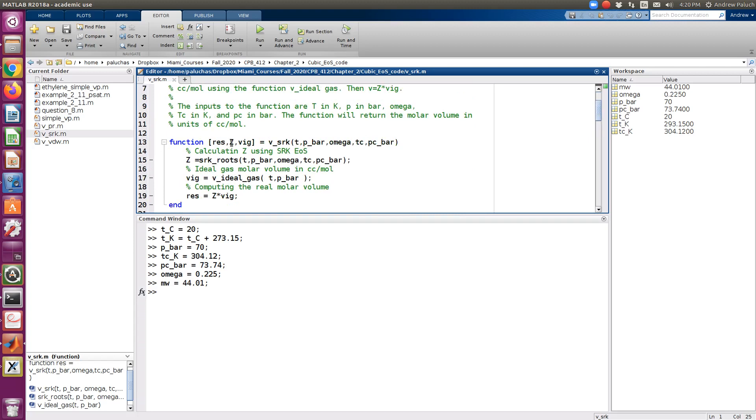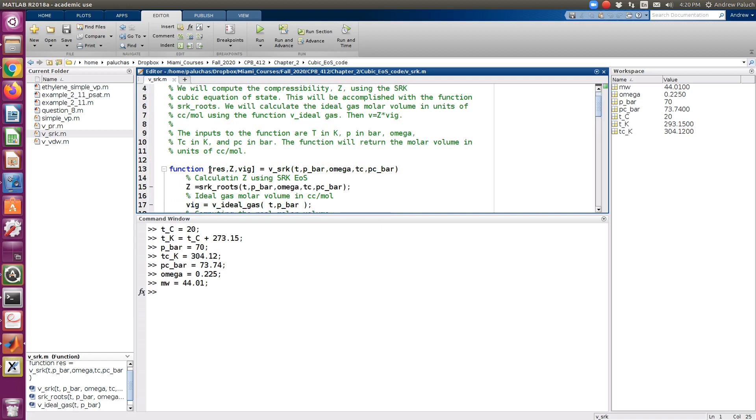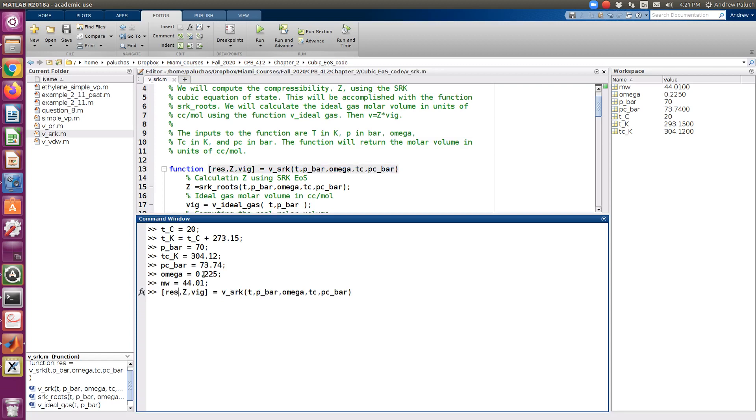So I'm just going to copy the function signature. Okay. First argument that it'll return is V, could be more than one. So let's make it a vector. Z, and then there's V ideal gas. So temperature in Kelvin, pressure in bars, omega, TC in Kelvin, and PC in bars. Good. So if I run it.